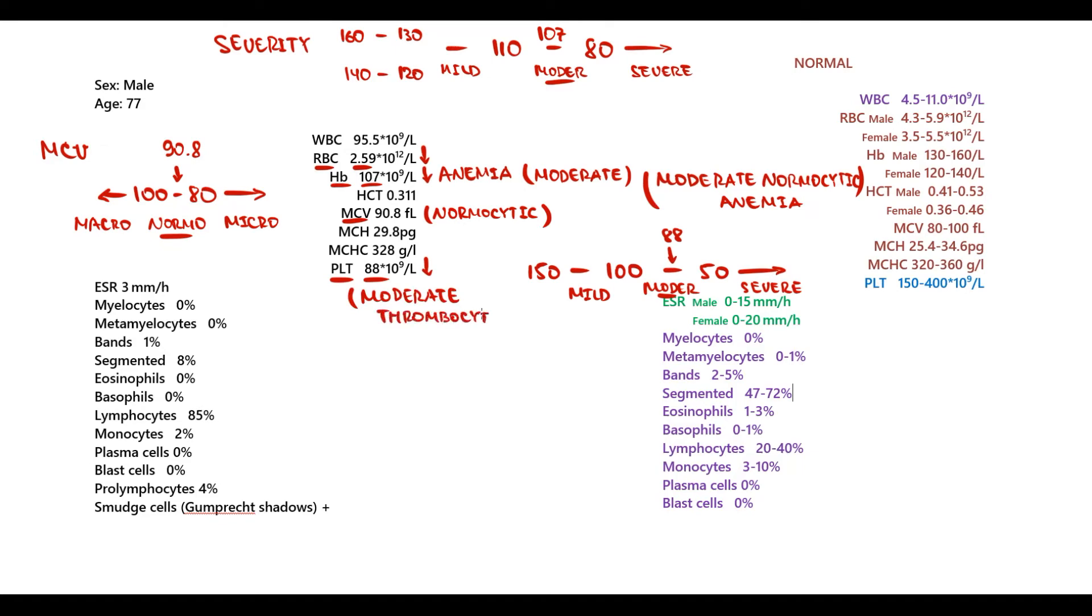The next value we are looking at are white blood cells. White blood cell count is 95.5, which is very high. We have to determine which cells caused this elevated white blood cell count. There are three major possibilities: myelocytes, lymphocytes, and blast cells.